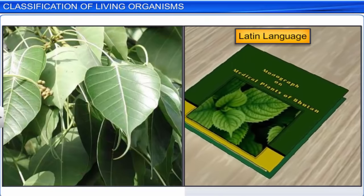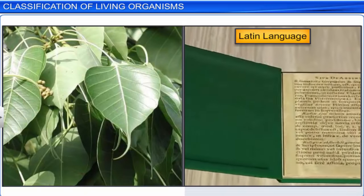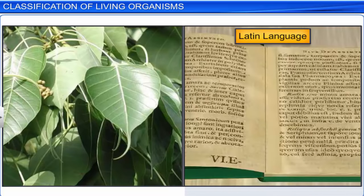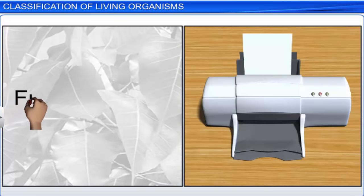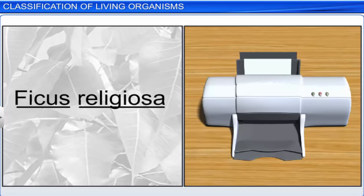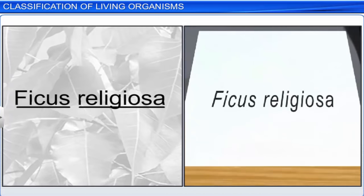Scientific or biological names are generally in Latin, or derived from Latin, irrespective of the origin of the organism. Also, when a scientific name is handwritten, both the words and the name are underlined separately. Whereas, when printed, it is in italics, to indicate its Latin origin. Finally, the first word of the genus starts with a capital letter, and the specific epithet starts with a small letter.